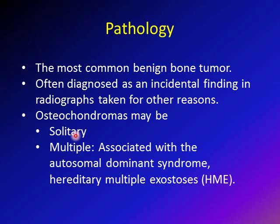Osteochondromas can be solitary — meaning one osteochondroma in the body — or multiple. The multiple osteochondromas are associated with a syndrome called hereditary multiple exostosis, which is an autosomal dominant syndrome that we're going to discuss in detail.